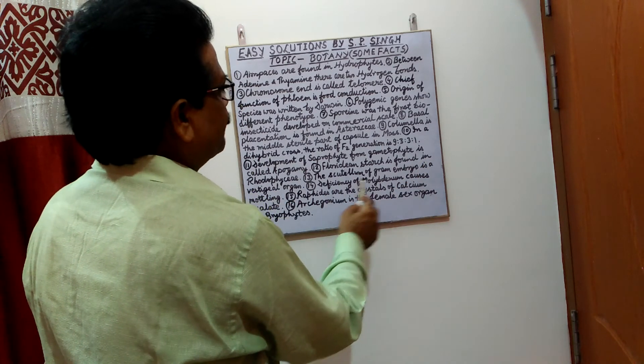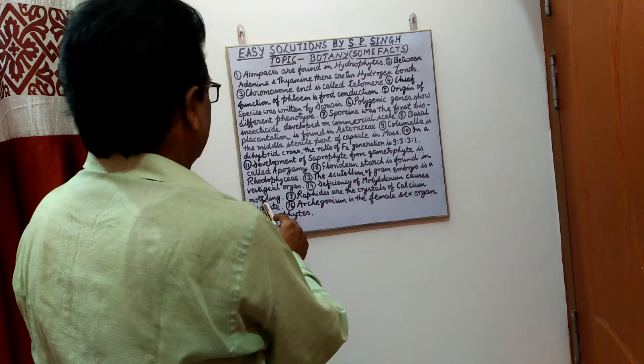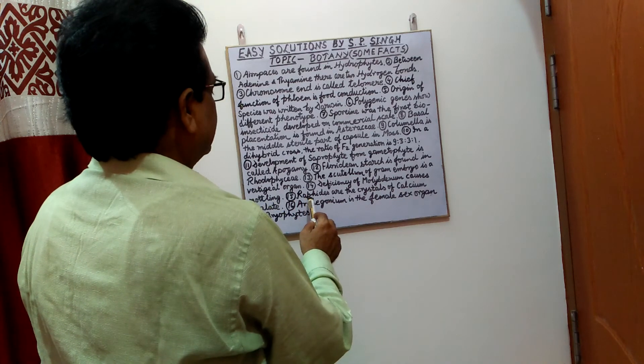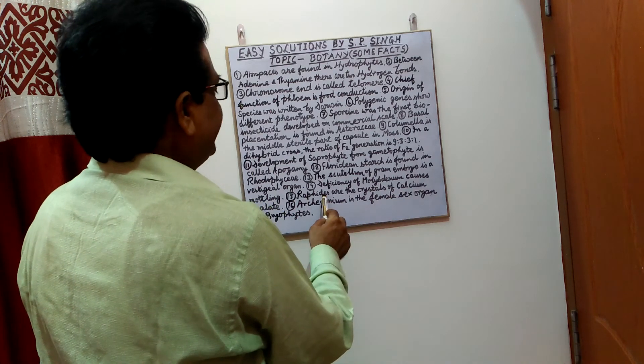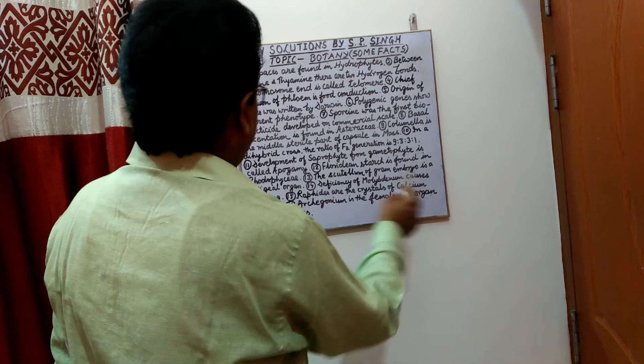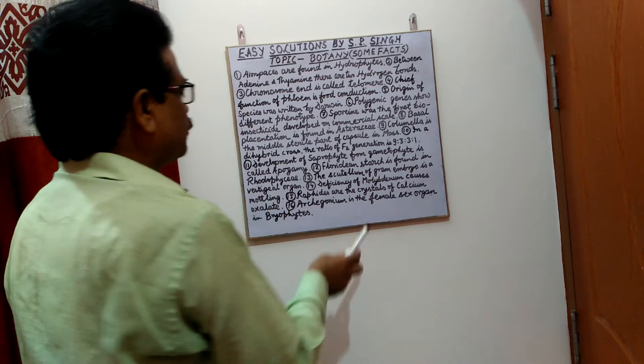Deficiency of molybdenum causes mottling. Raphides are the crystals of calcium oxalate.